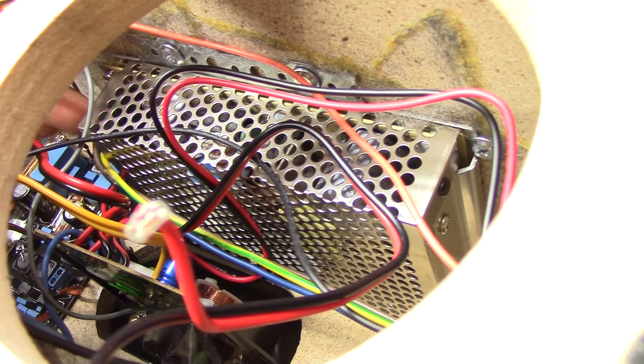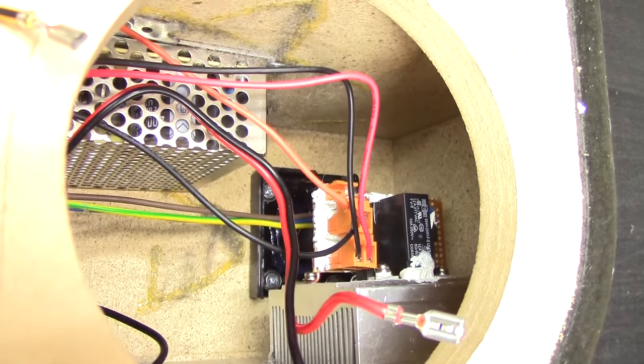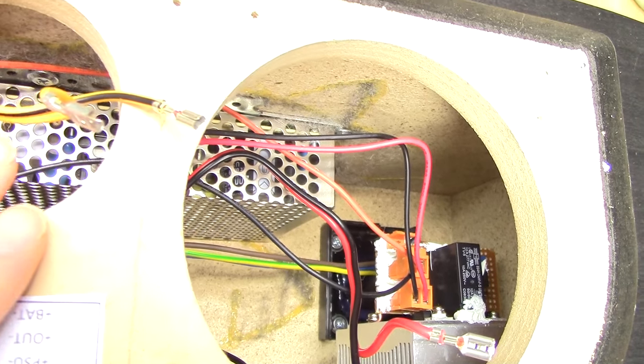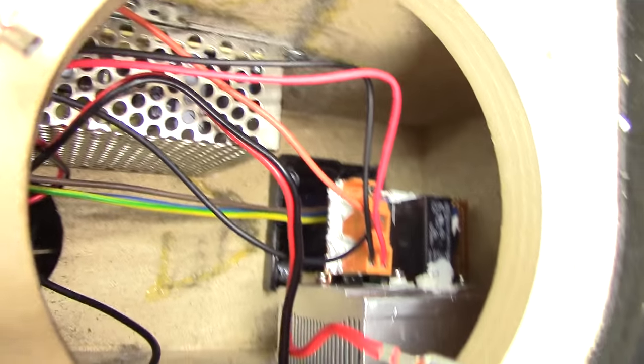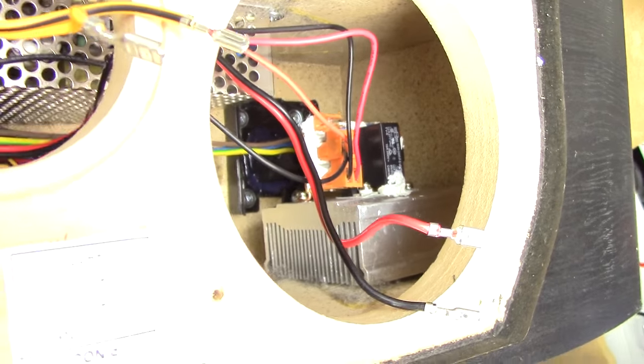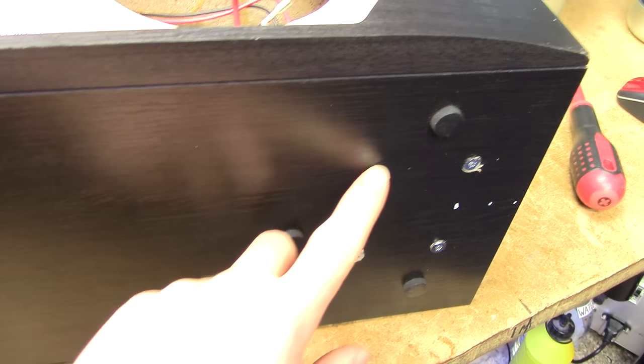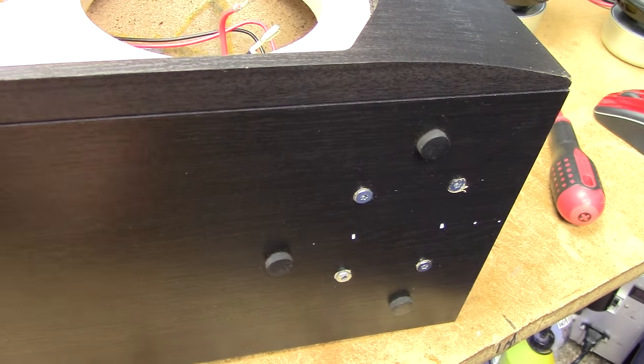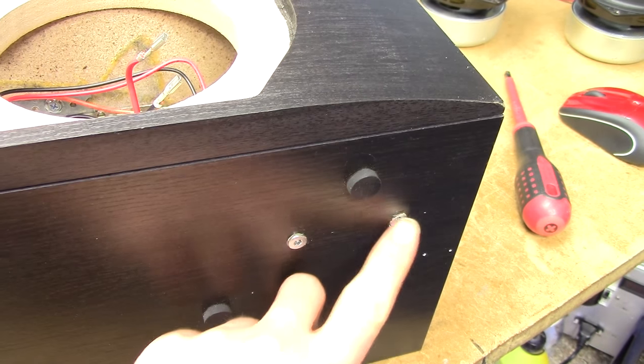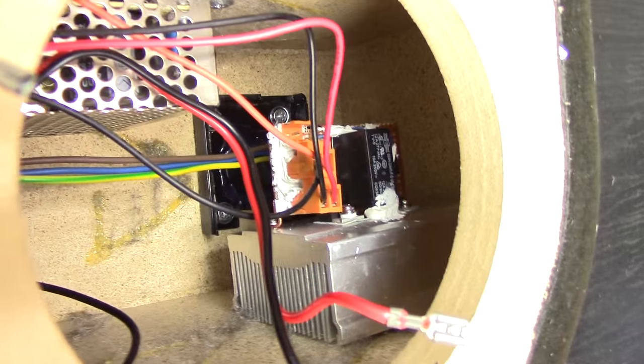And this just took straight to the mains input over there. So, whenever this thing is plugged into the wall, this power supply is going to be active. And there, mounted to the bottom or left side of the case, just with a few screws going a bit crudely through the outside of it. I didn't manage to recess them quite as well as I did hope to.